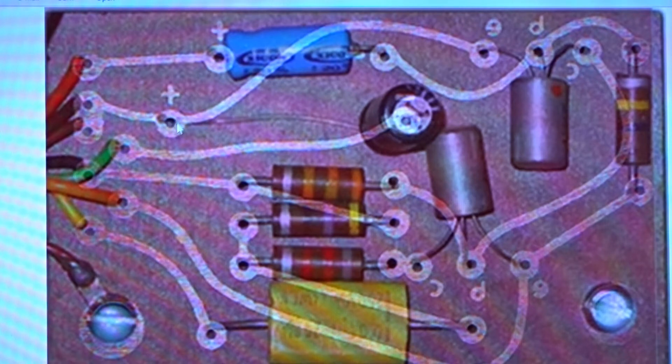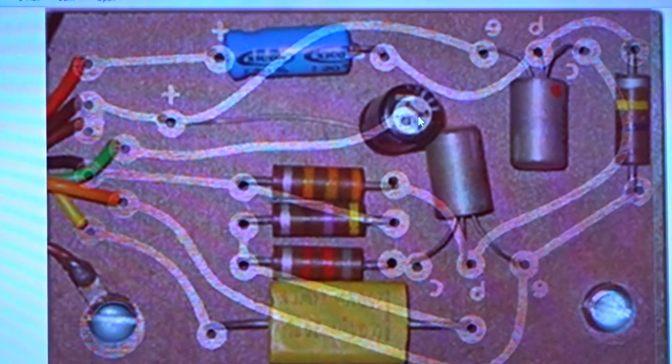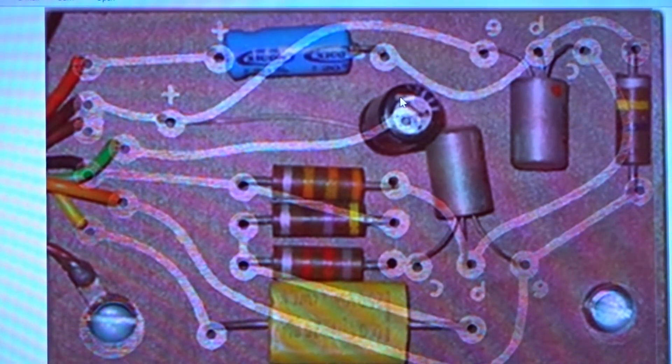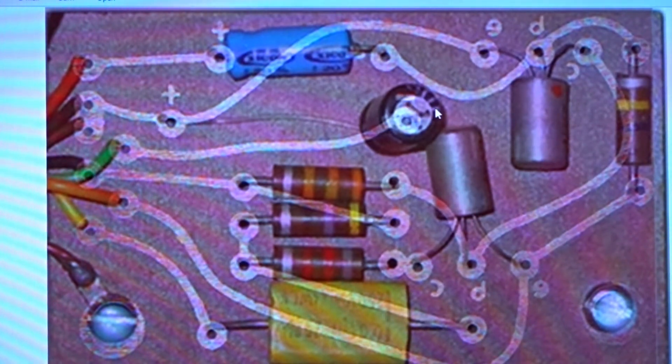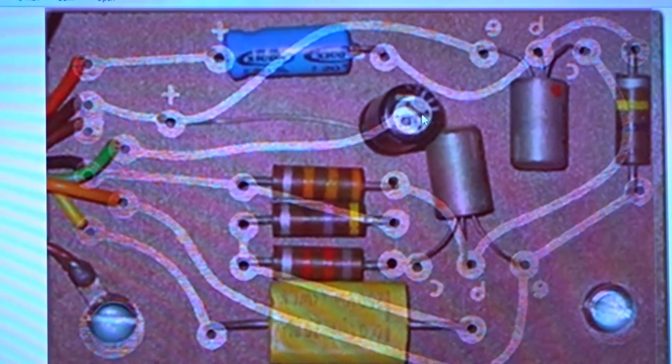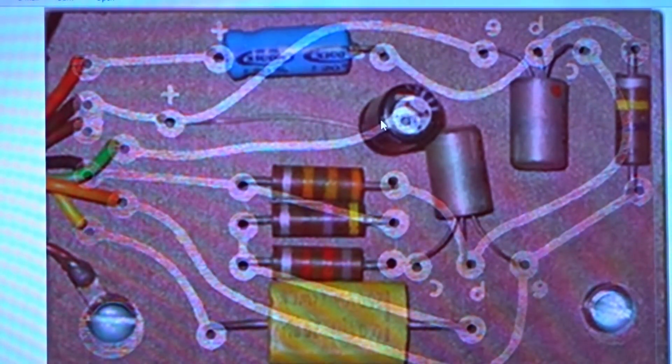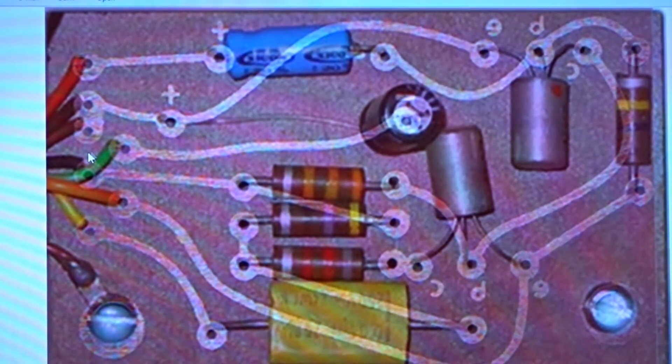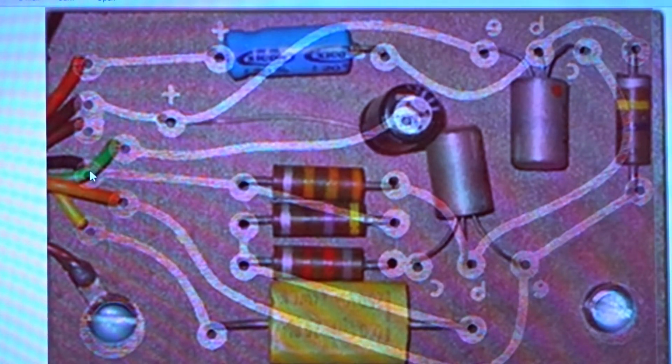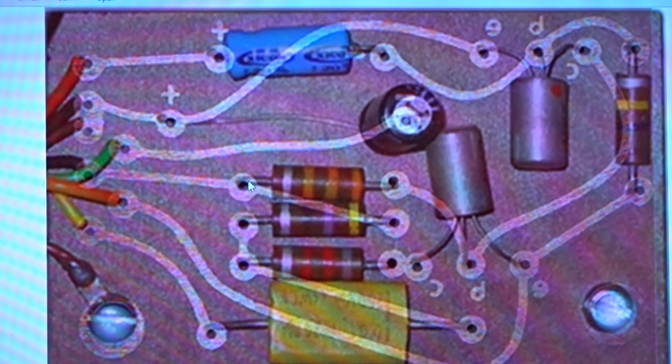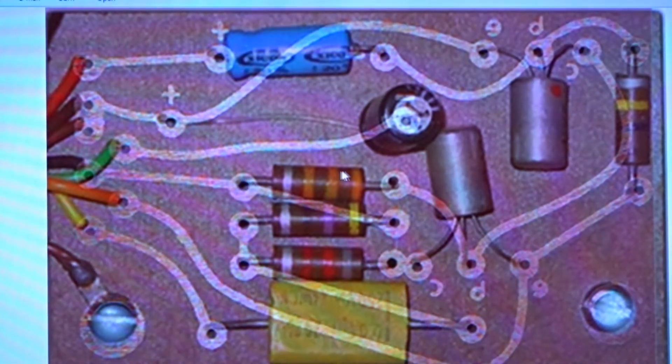Moving down to this green one, you can see the trace runs over underneath. It's very hard to see but you can see it - there is a negative mark here indicating the negative side here. That's where this cap gets soldered into. If we move over to this wire, which we go down one, that's going to get soldered in. It's going to connect to this resistor.